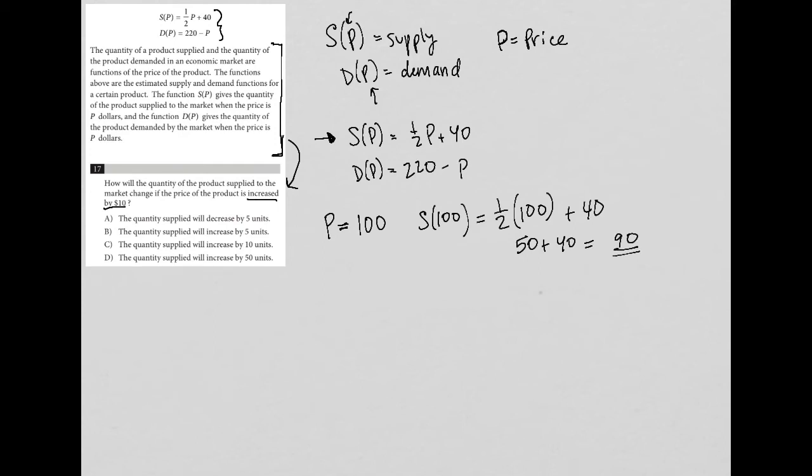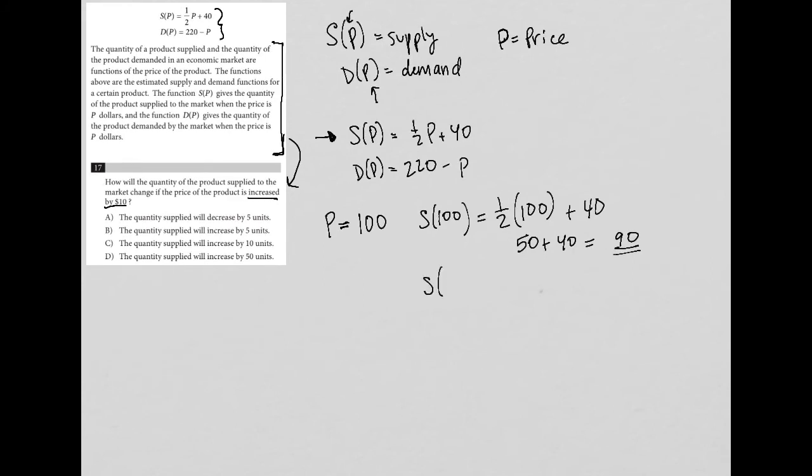Now, what happens when I increase that value by $10? That would be S of 110. So S of 110 becomes one-half times 110 plus 40. Half of 110 is 55, and 55 plus 40 is 95. We went up by $5.